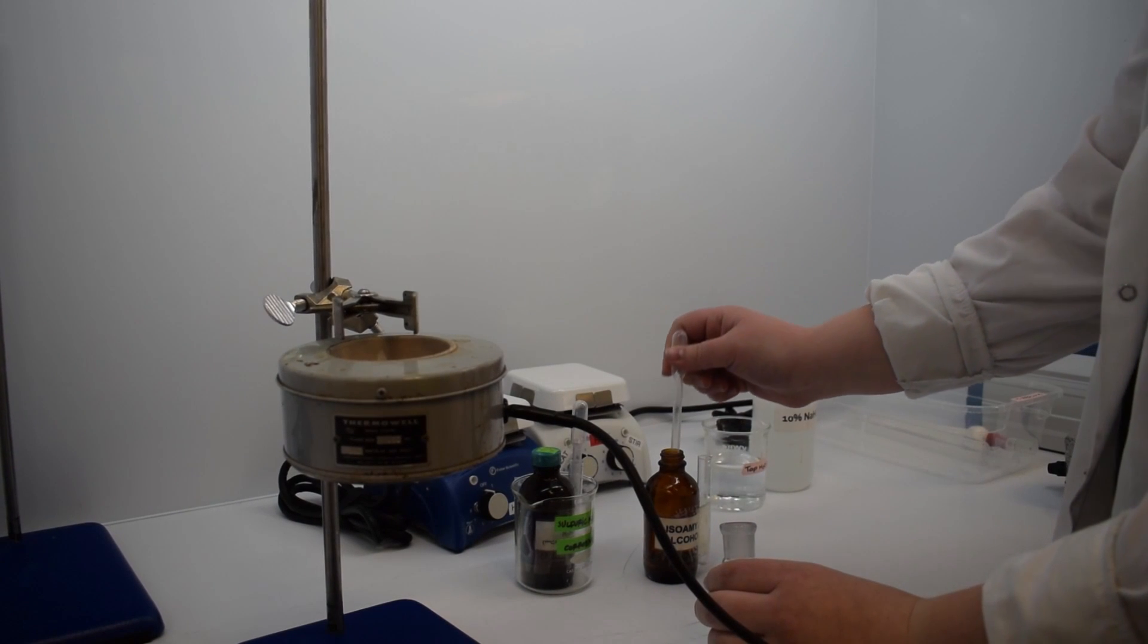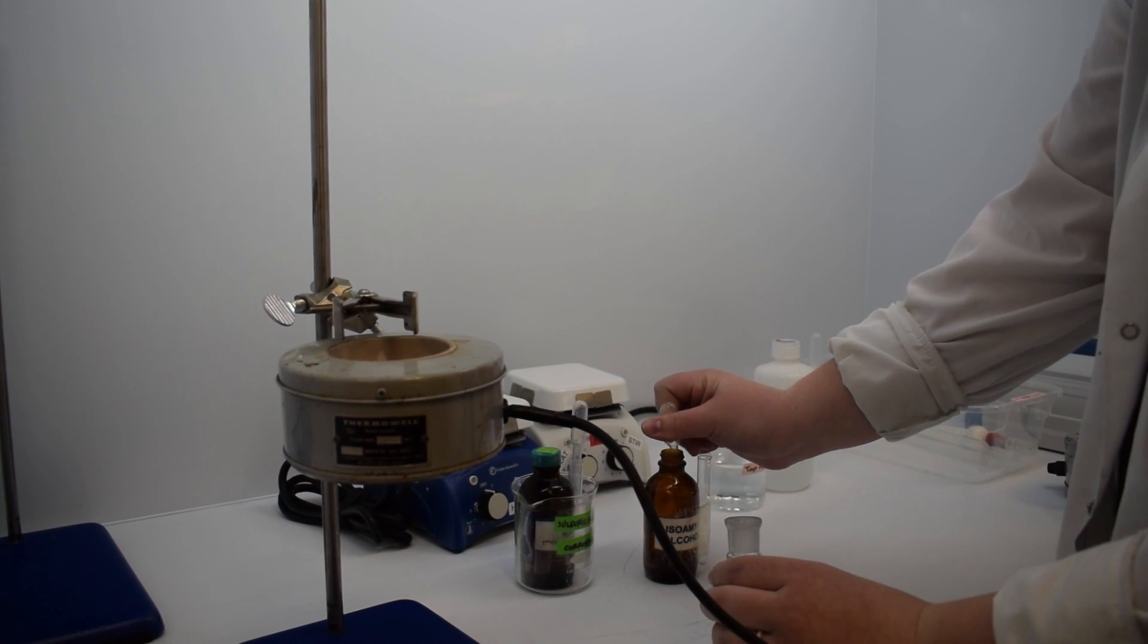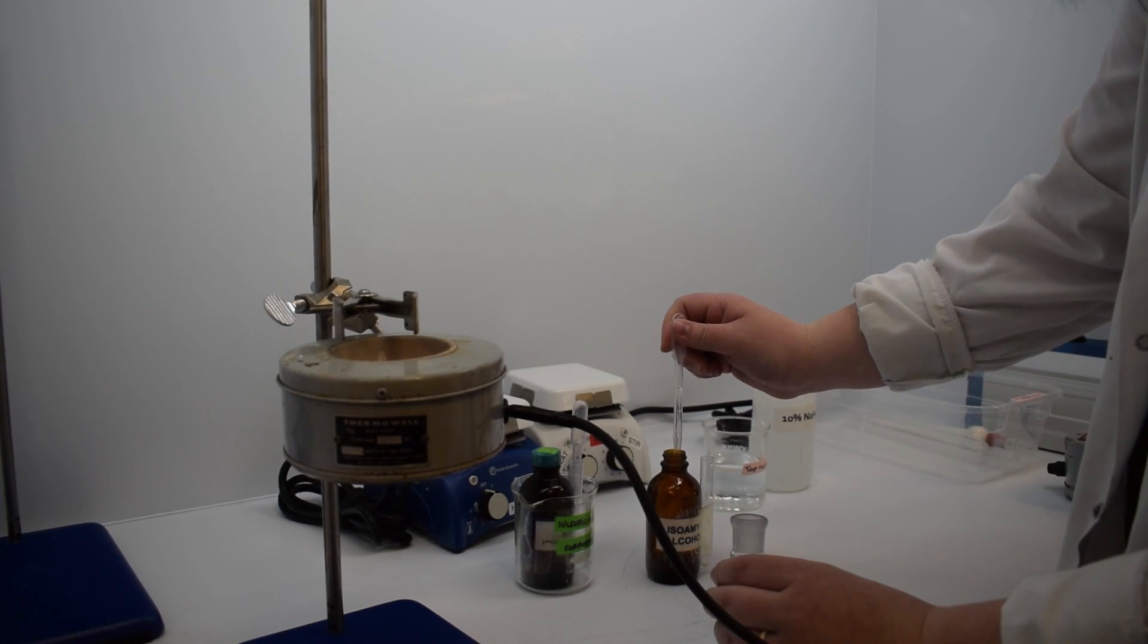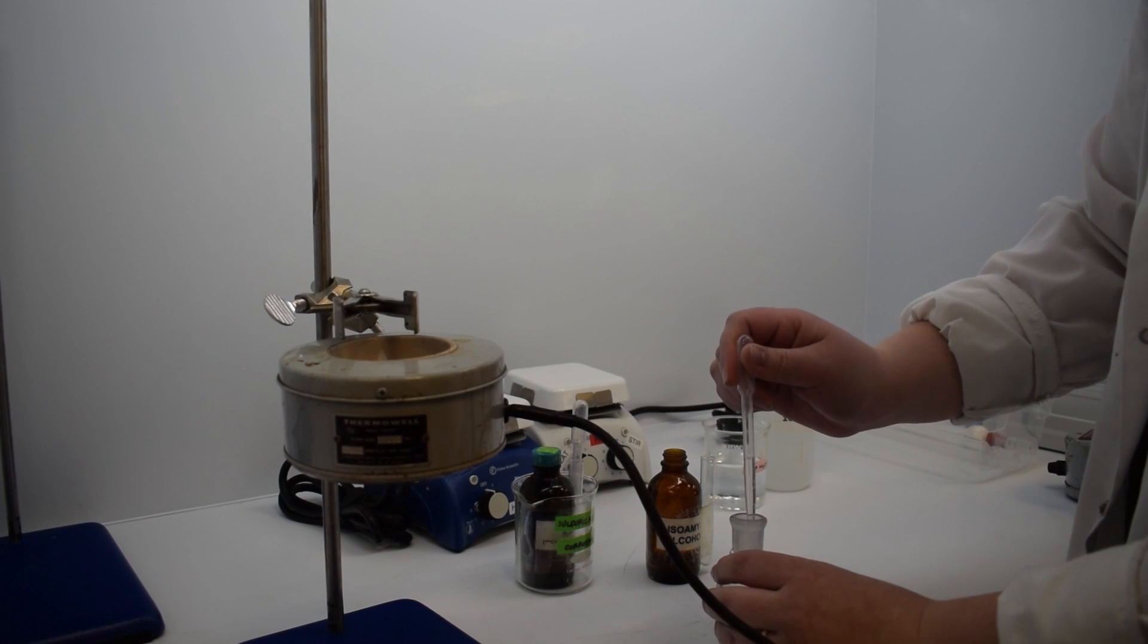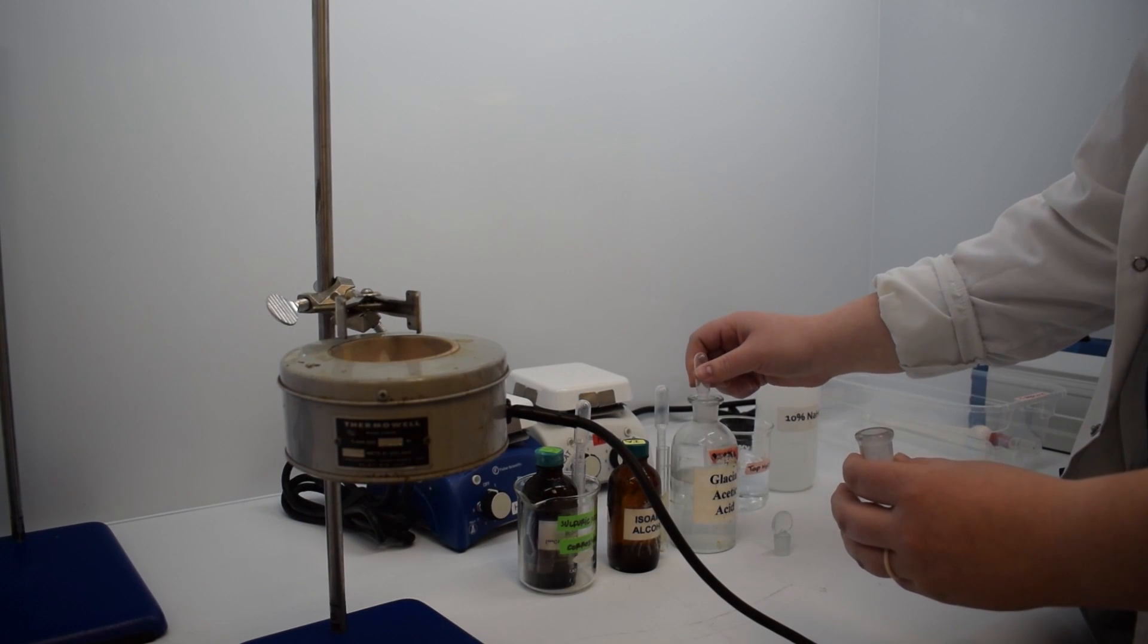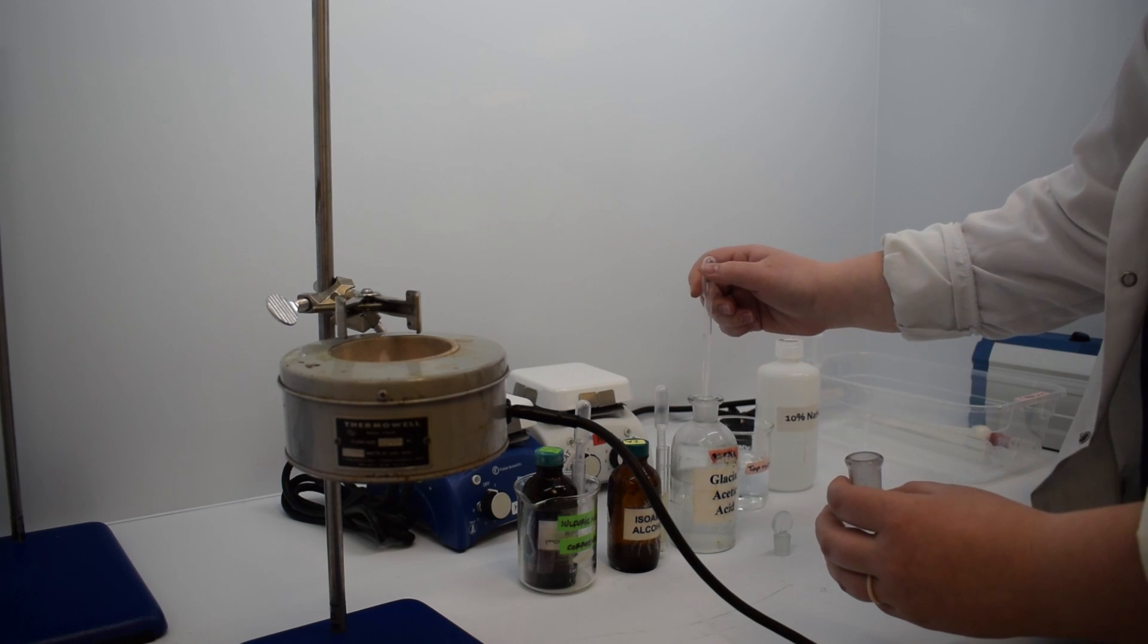We are going to begin with the synthesis of our ester. First, we are adding three milliliters of the alcohol reactant to our round bottom flask. This round bottom flask already has three boiling chips in it.